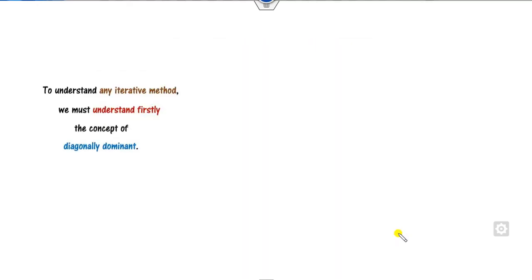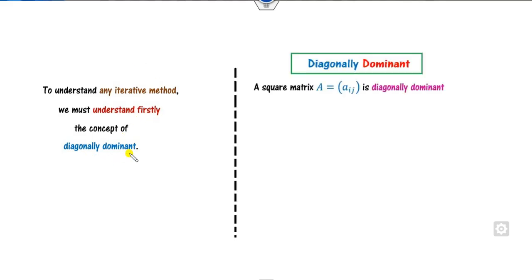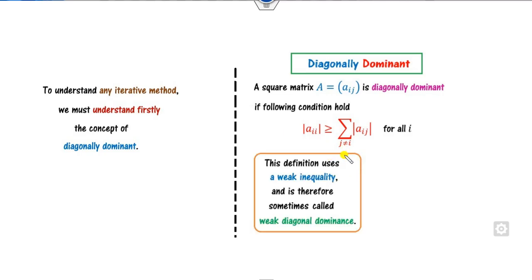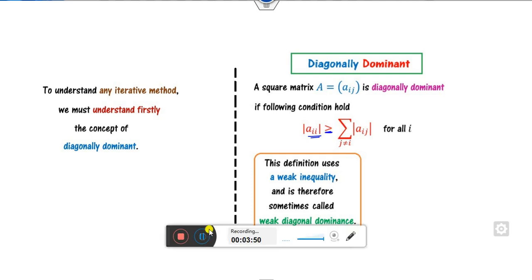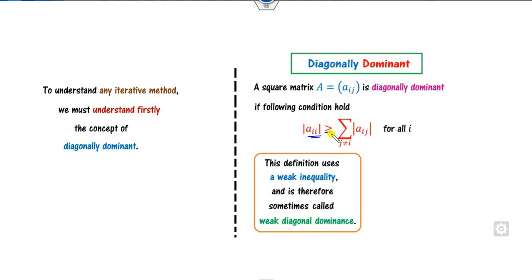To understand any iterative method, we first need the concept of diagonal dominance. A matrix A is said to be diagonally dominant if the absolute value of each diagonal entry is greater than or equal to the sum of the absolute values of the other entries in that row. Since this inequality includes equality, we call it weak diagonal dominance.